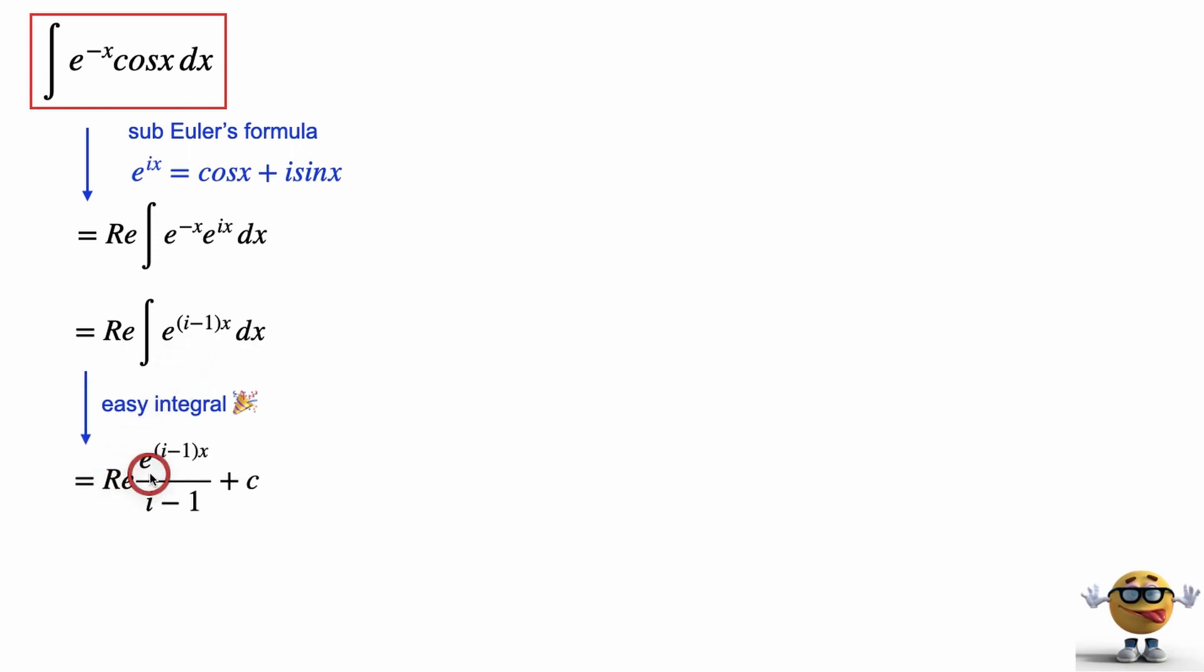and it's the real portion of e to the (i minus 1)x divided by (i minus 1) plus the integration constant c.